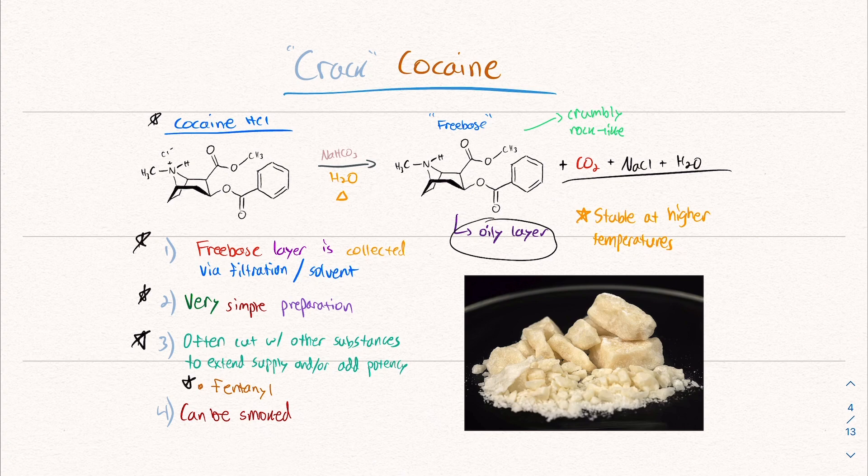It's oftentimes cut with other substances to extend supply or potency. And sometimes fentanyl is involved and there's been a fair amount of people who have died from fentanyl overdoses thinking they were consuming a pure cocaine, more so pure. Like I said, it's hard to find the pure stuff.